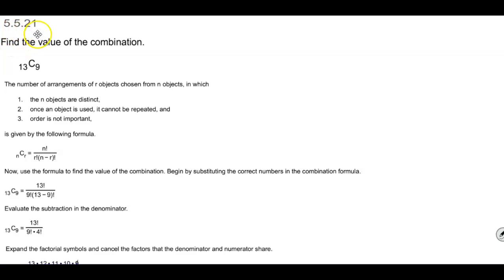In section 5.5.21 we want to find the value of the combination. So the combination has the letter C and the definition states that the number of arrangements of r objects chosen from n objects in which the n objects are distinct,